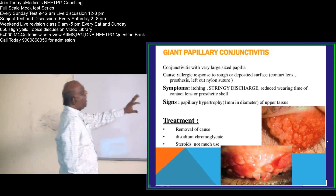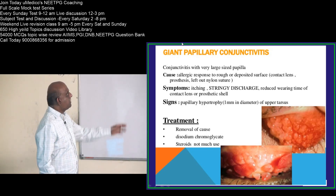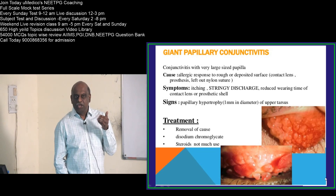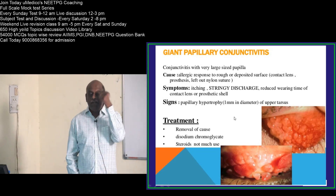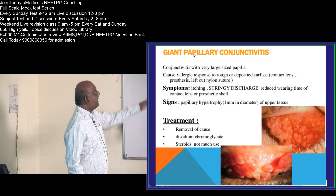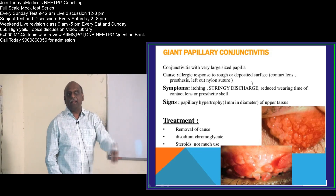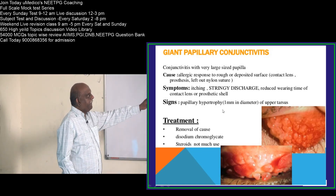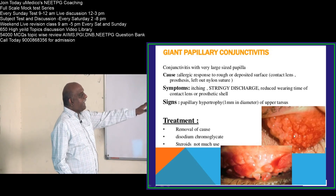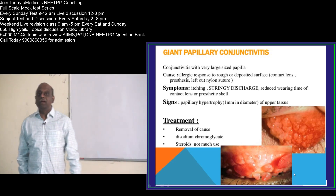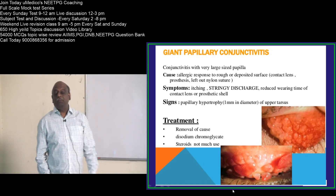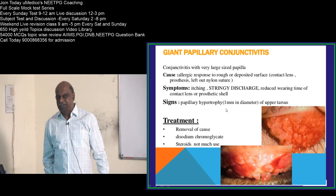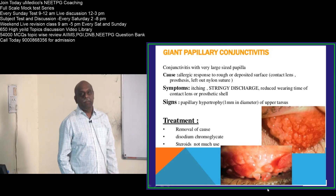Giant papillary conjunctivitis involves large-sized papillae, mainly because of an allergic response. If you put a contact lens, or if there is any prosthesis, or a left-out nylon suture, they can all predispose to giant papillary conjunctivitis. There will be a stringy discharge and papillary hypertrophy on the upper tarsus classically. Disodium chromoglycate has a role here.